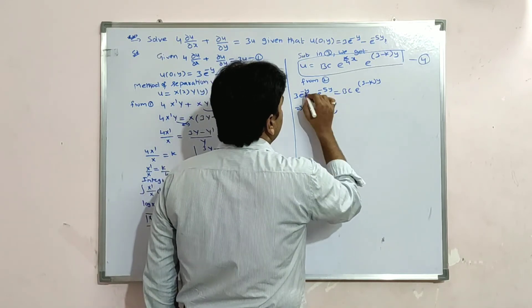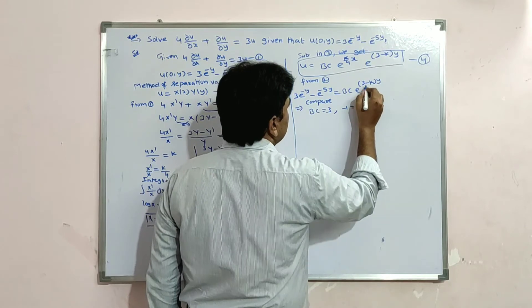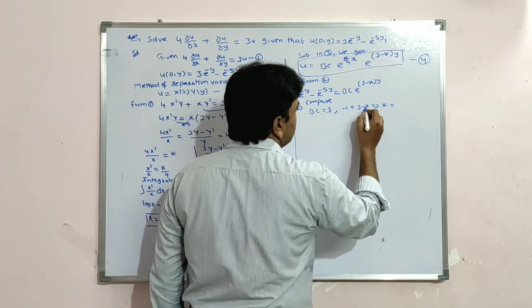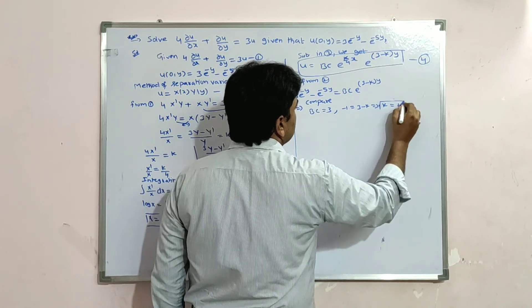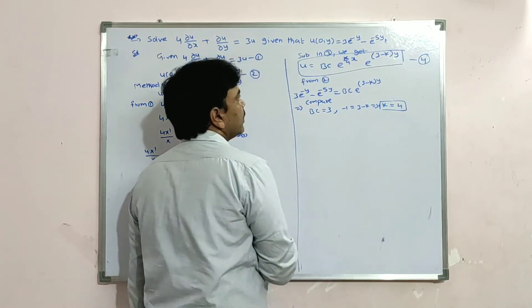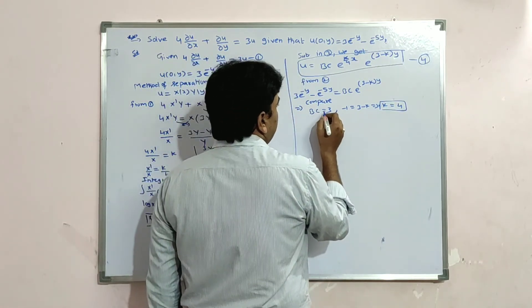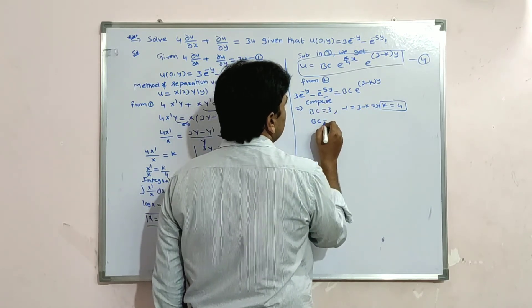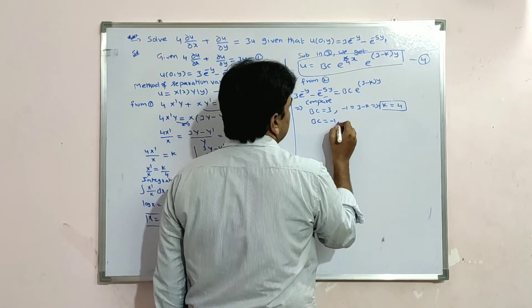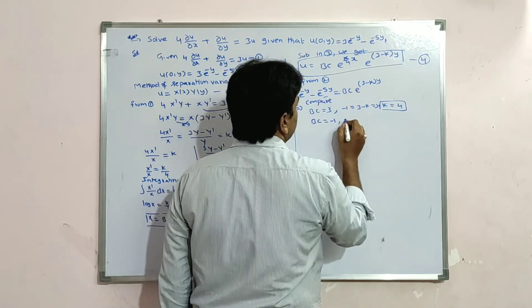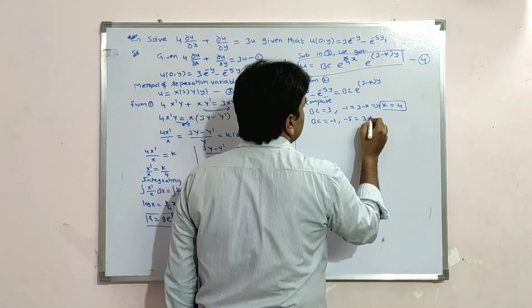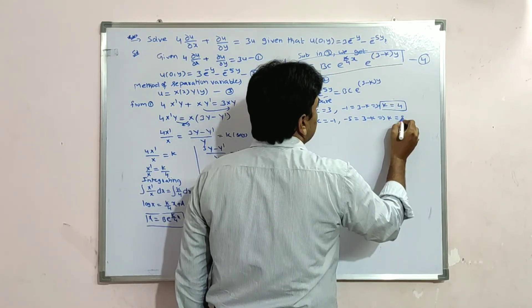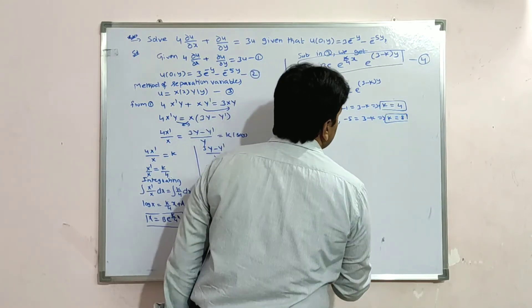From the second term comparison: BC = −1 and (3−k) = −5, which implies k = 8.